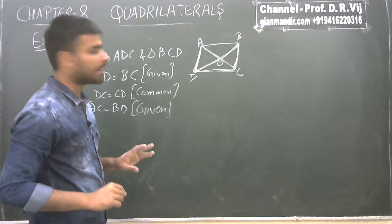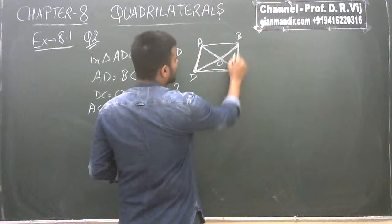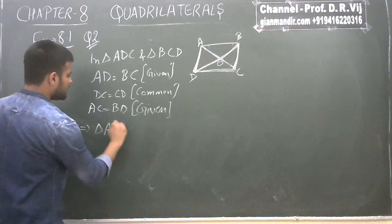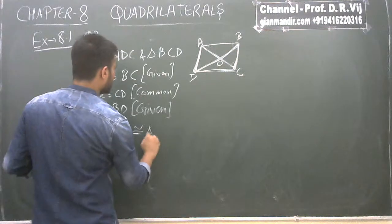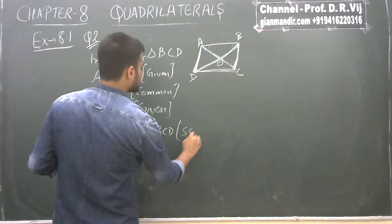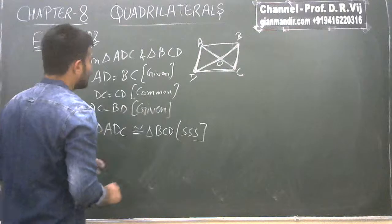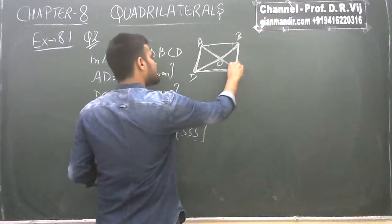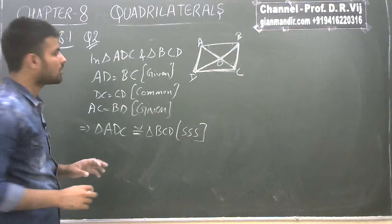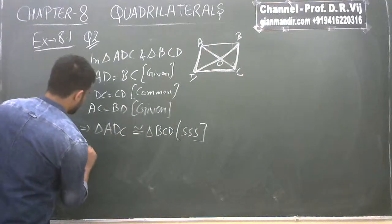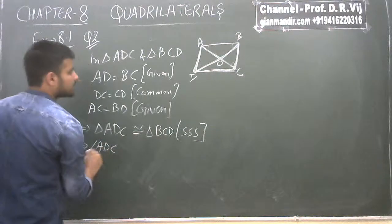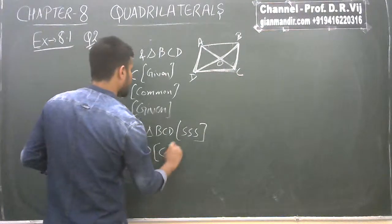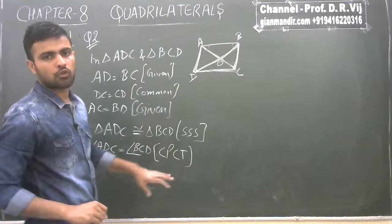By these three conditions, triangle ADC is congruent to triangle BCD by the SSS congruency rule. So it follows that angle ADC equals angle BCD by CPCT — corresponding parts of congruent triangles.